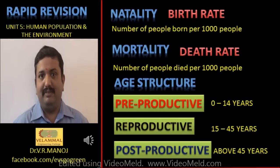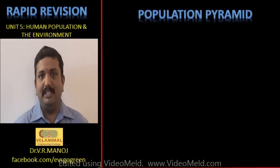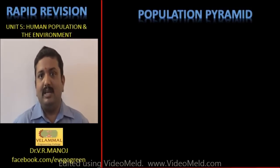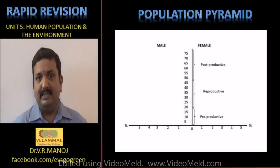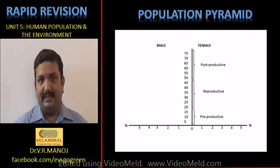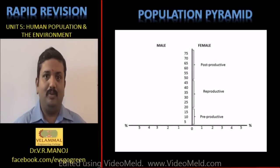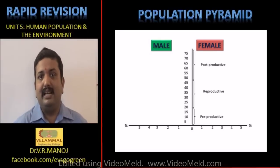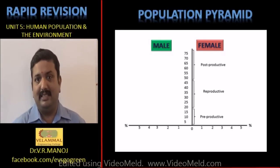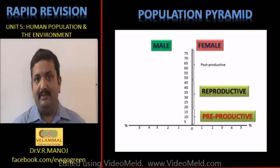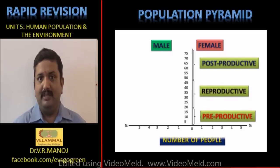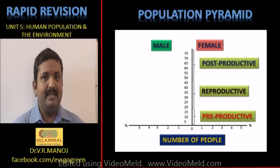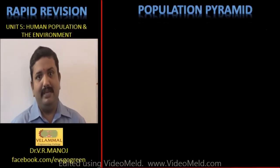Depending on the age structure, you can draw the status of any given population on a graphical scale called a population pyramid. The population pyramid consists of a horizontal axis with a perpendicular axis placed in the middle — on one side you have males and the other side females. This graph is based on the pre-reproductive, reproductive and post-reproductive age groups.